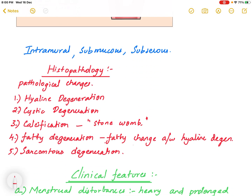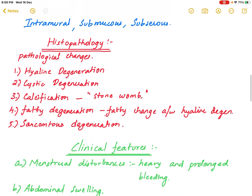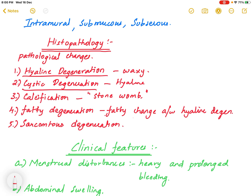Looking at histopathology, the most common pathological change in fibroids is hyaline degeneration, where fibroids acquire a waxy character. Next is cystic degeneration, where hyaline degeneration is accompanied by liquefaction within the fibroid.